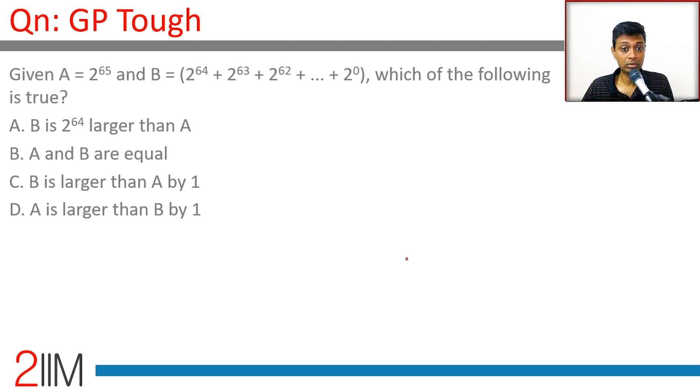A is 2^65, B is 1 + 2 + 4 + ... + 2^64 + 2^63 + 2^62, all the way there. Powers of 2 exhibit a brilliant pattern.